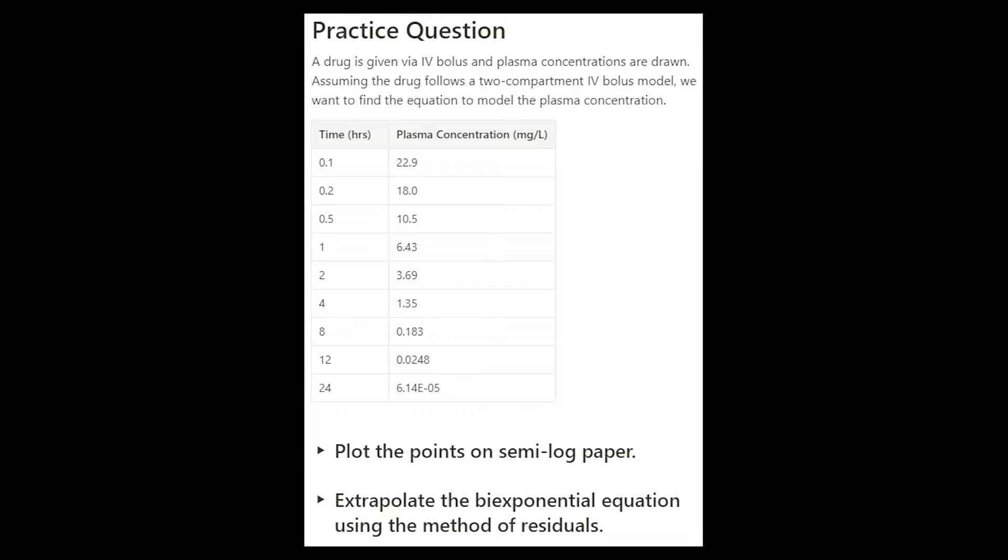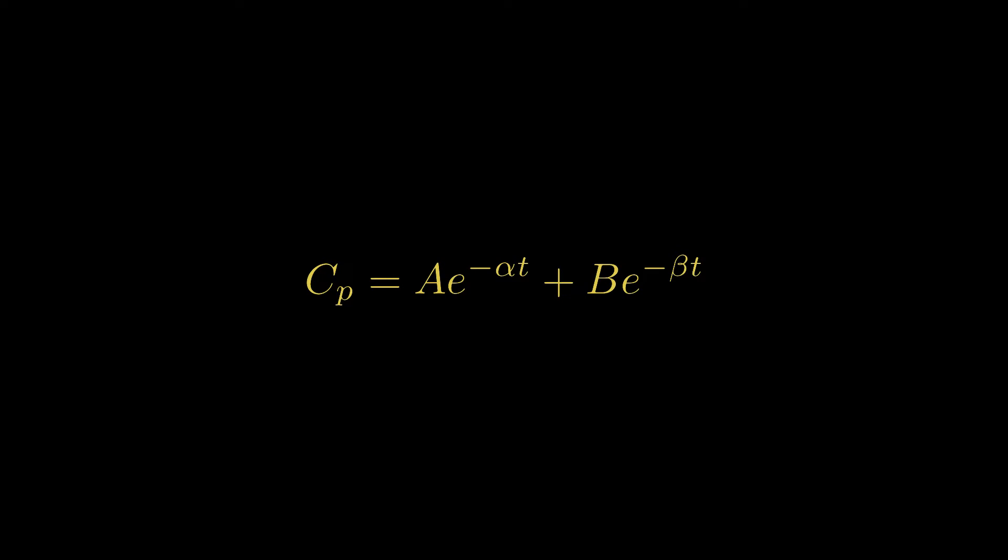This means we'll be looking for a bi-exponential equation of the form a times e to the negative alpha t plus b times e to the negative beta t.